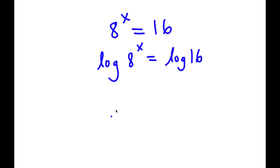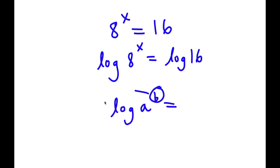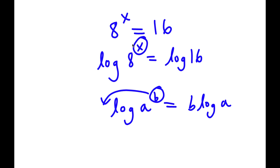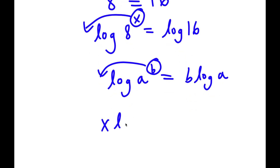Now if I have something in the form log a to the power of b, I can simply move this exponent b to the front, so this equals b times log a. So in this case, I have log 8 to the power of x, and I can move x to the front. So this is going to equal x times log 8, which is equal to log 16.